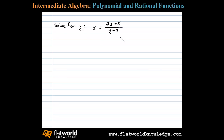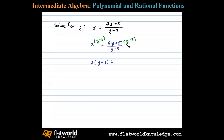Solve for y. In this section we're assuming that variable expressions do not evaluate to 0 in the denominator. Let's begin by multiplying both sides by y minus 3. Doing that, we'll be left with x times y minus 3 equals 2y plus 5. Notice that's equivalent to cross multiplying here.